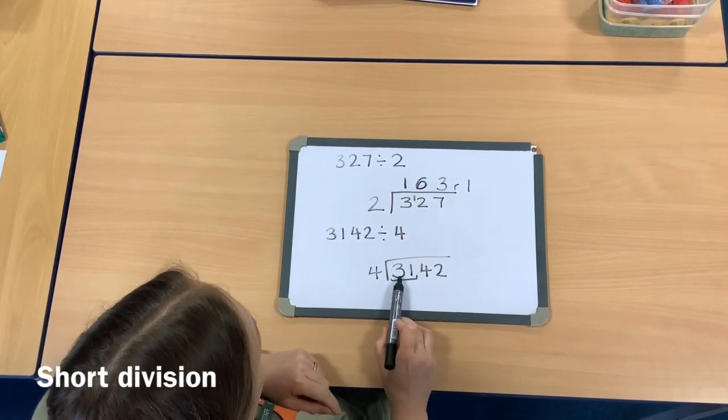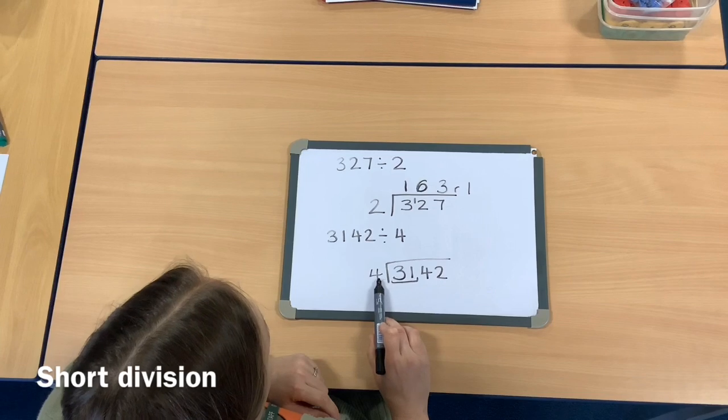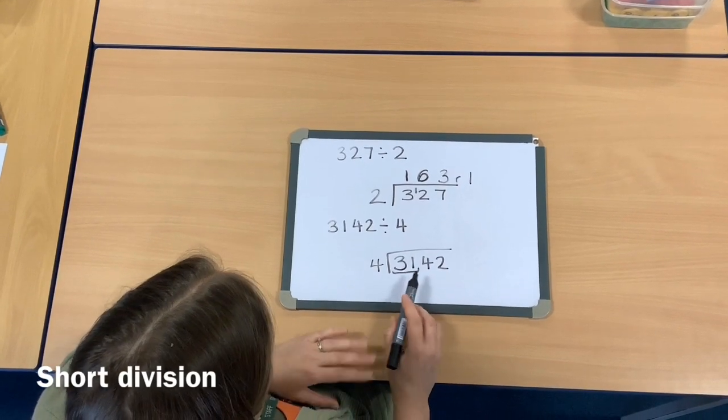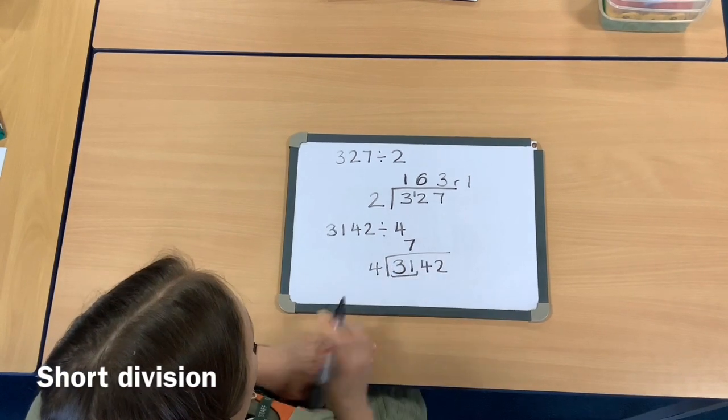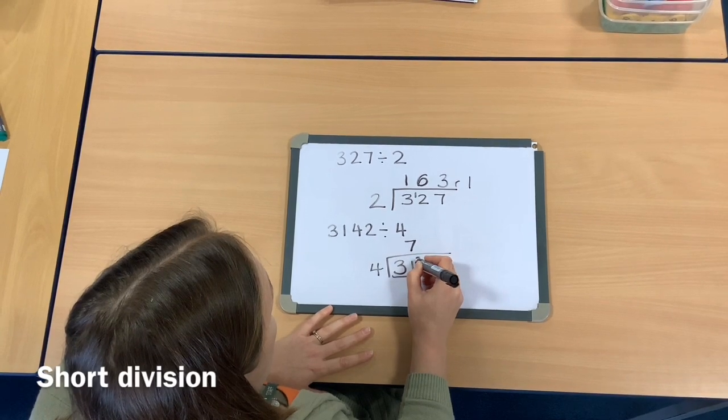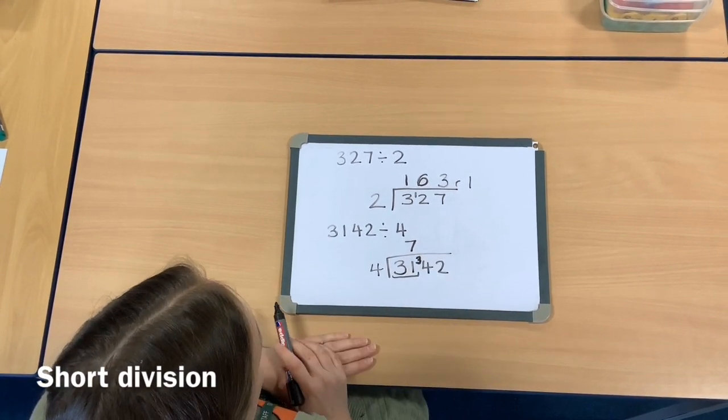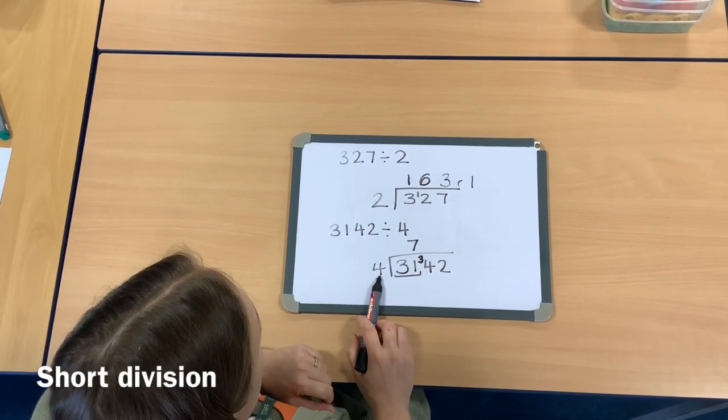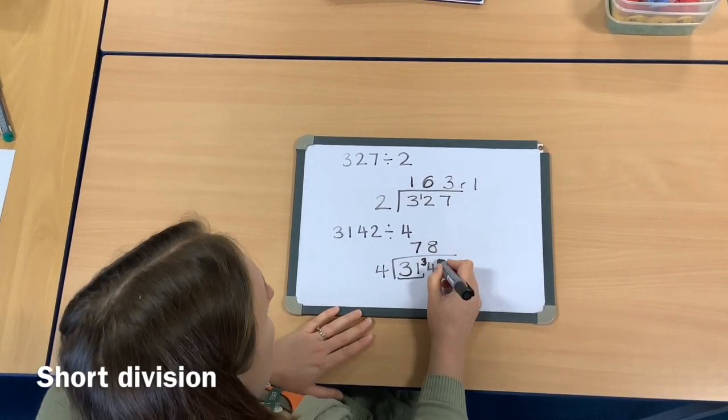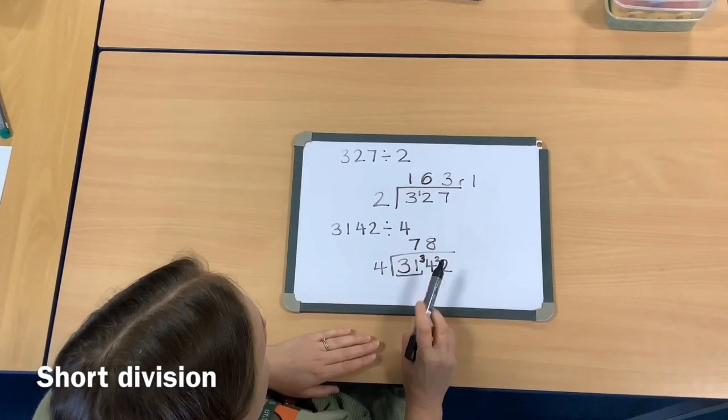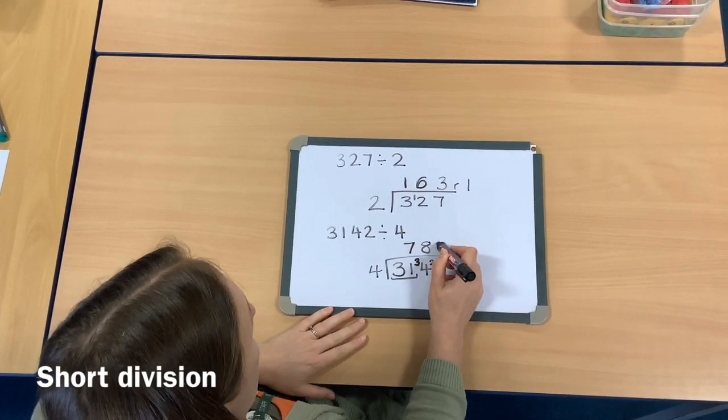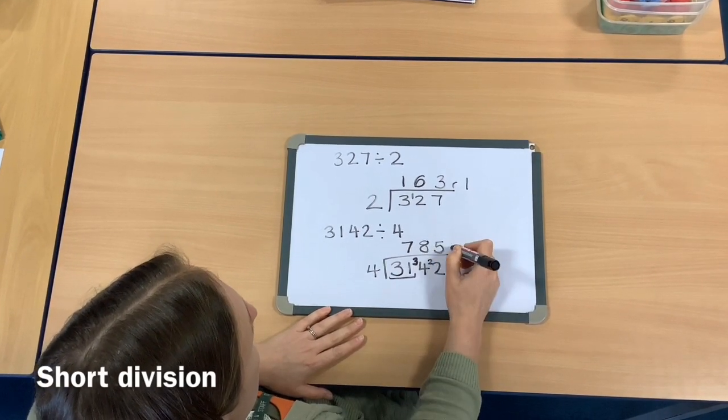I've now got 31 hundreds. I need to split those into 4 equal groups. I know that I can do 28 of those, which will be 7 in each group because 4 times 7 is 28. But I have 31, so I've got 3 left, which become my tens. I've now got 34 tens. I need to divide those into 4 equal groups, so I can have 8 in each group—that will be 32—which means I've got 2 left, which I'm going to exchange for ones. I've now got 22 ones. I need to split those into 4 equal groups, so I can share out 20 of them, which will be 5 in each group, but I would still have 2 left, which gives me the answer 785 remainder 2.